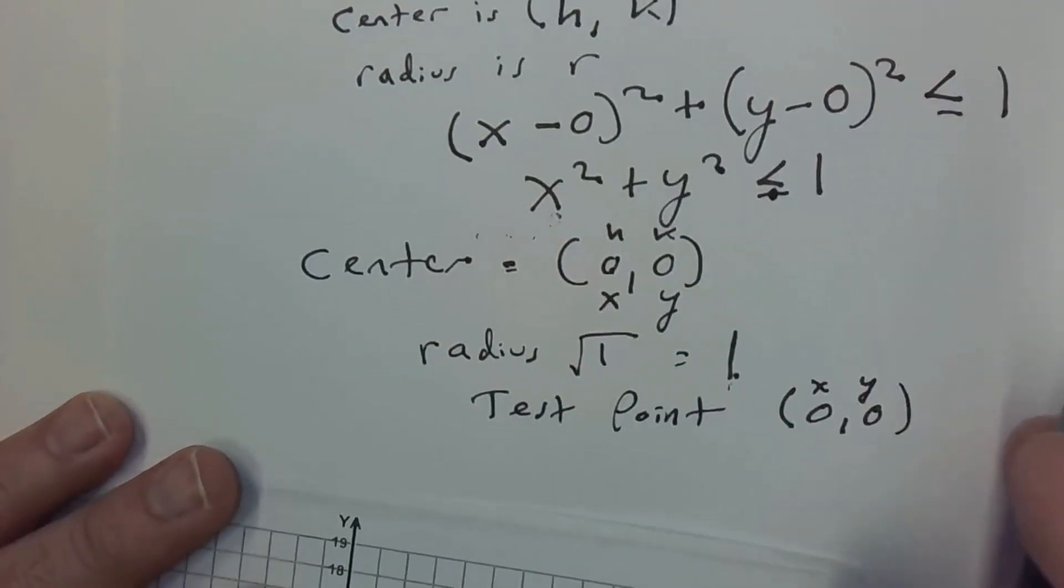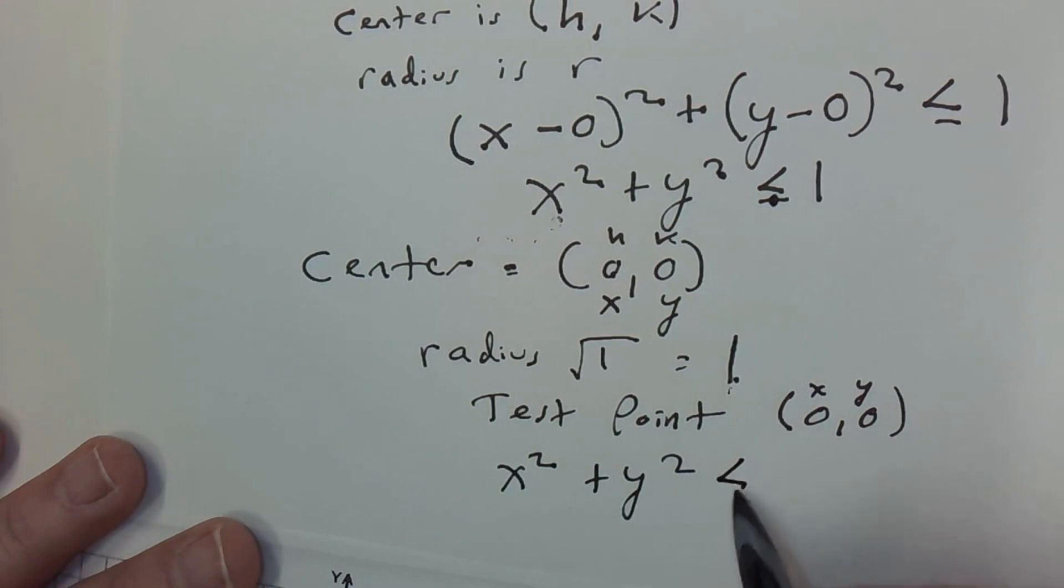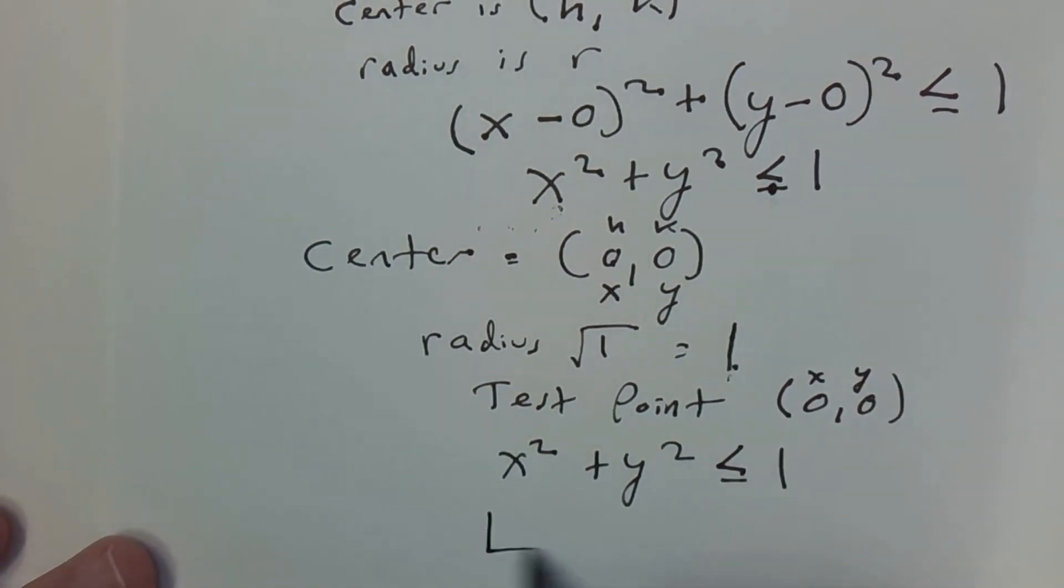Our original equation, as you recall, was x² + y² ≤ 1. So we're going to feed in the test point to see if it's true. So I'll pull out the x and that's squared. And I just leave an empty box there. Plus, I pull out the y. I'm going to label it. And that's squared. It's less than or equal to 1.